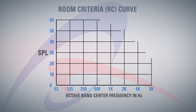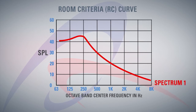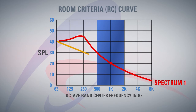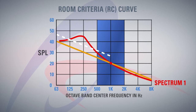The next step was the development of RC curves. An RC curve looks at the same spectrum as an NC curve, but it calculates the average value in the speech interference range — the frequency range that most directly affects your ability to communicate, typically the 500, 1000, and 2000 hertz octave bands. That average becomes your reference point, and from that point you draw a 5 dB per octave slope line. You then look at the actual measurements relative to this line — anything below 500 hertz gets a 5 dB tolerance.